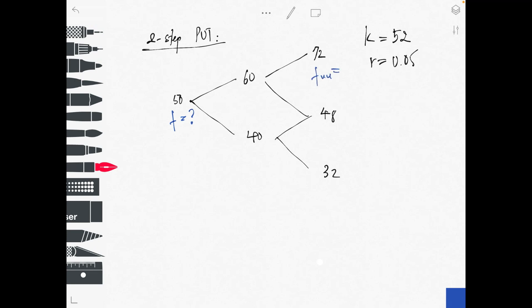Remember this is a put option — we want to sell at $52. If the stock price is above $52, the put option gives zero benefit. So f_uu equals zero. f_ud gives a $4 profit, and f_dd equals $20. Now we calculate f_u and f_d.